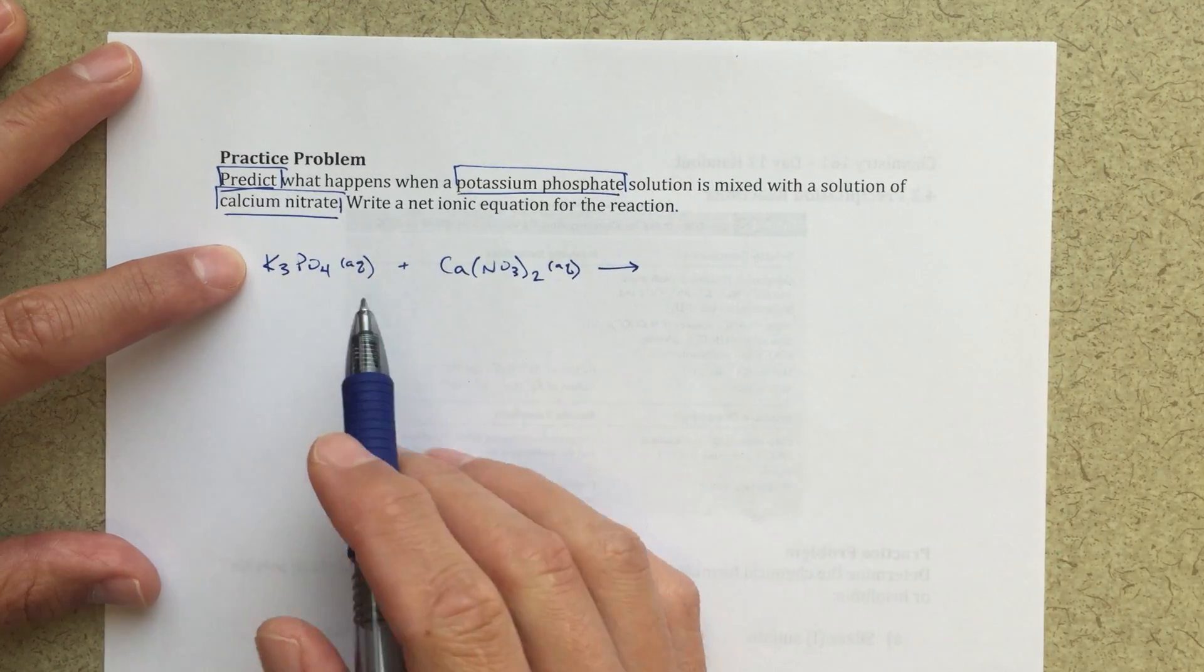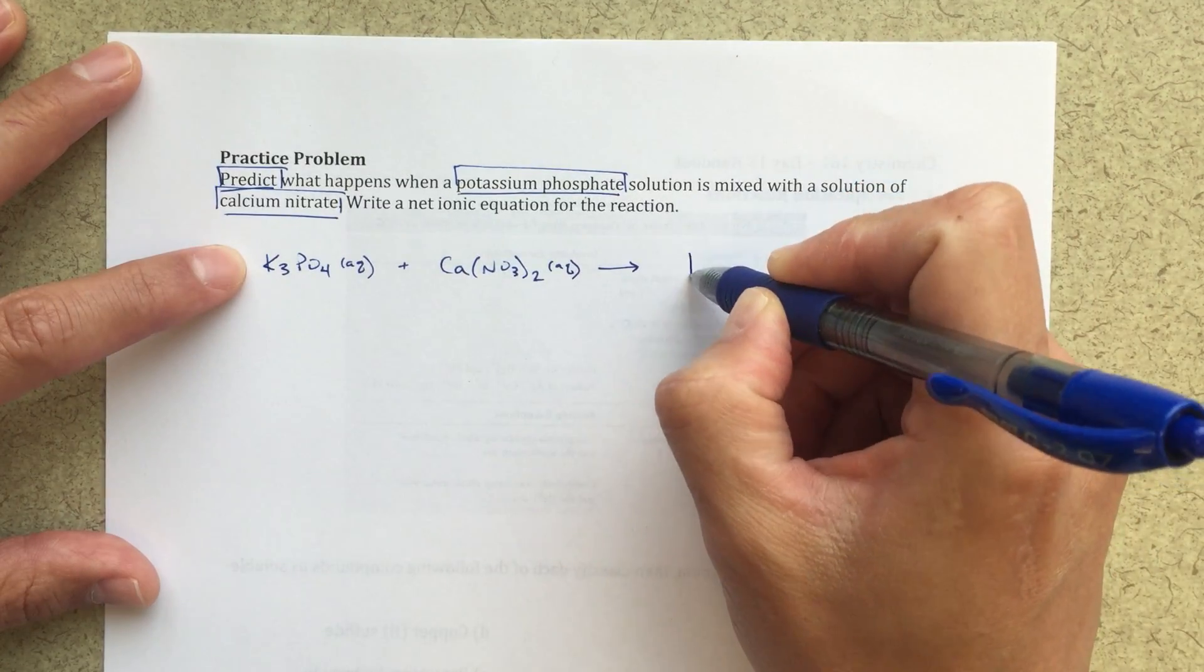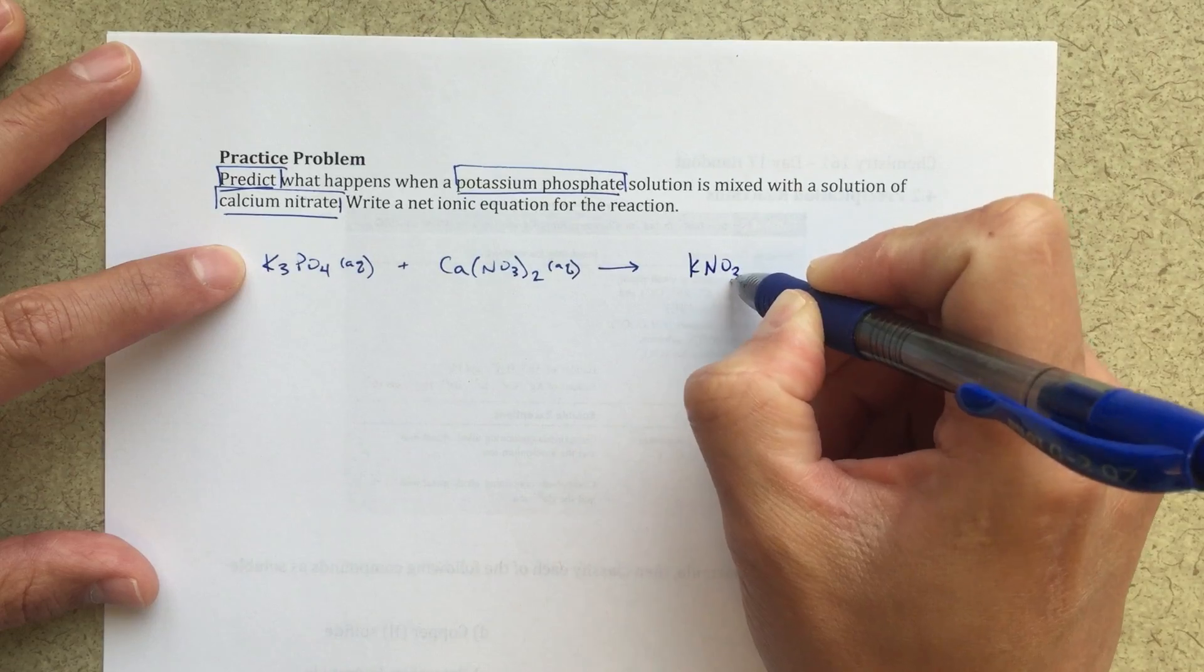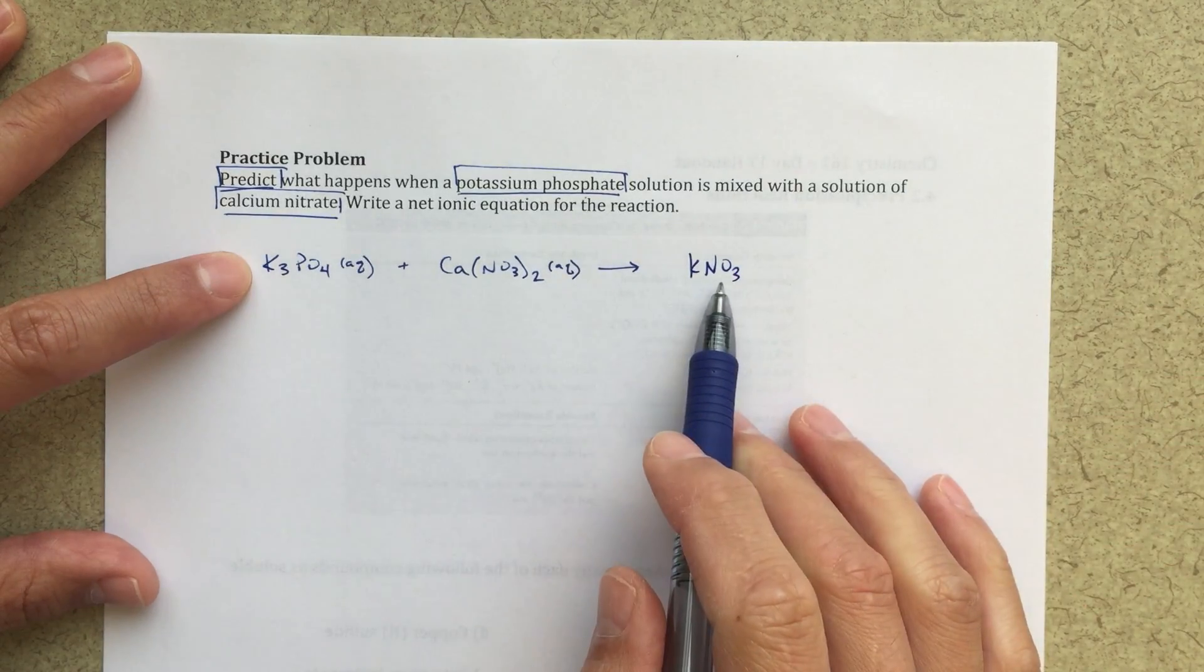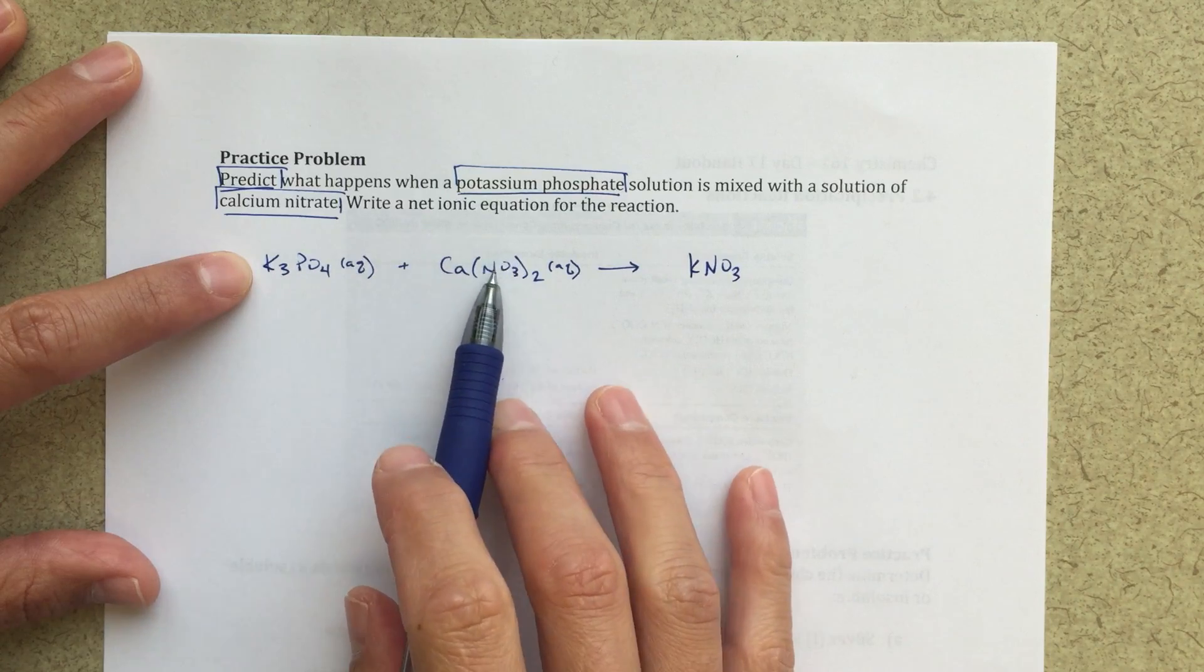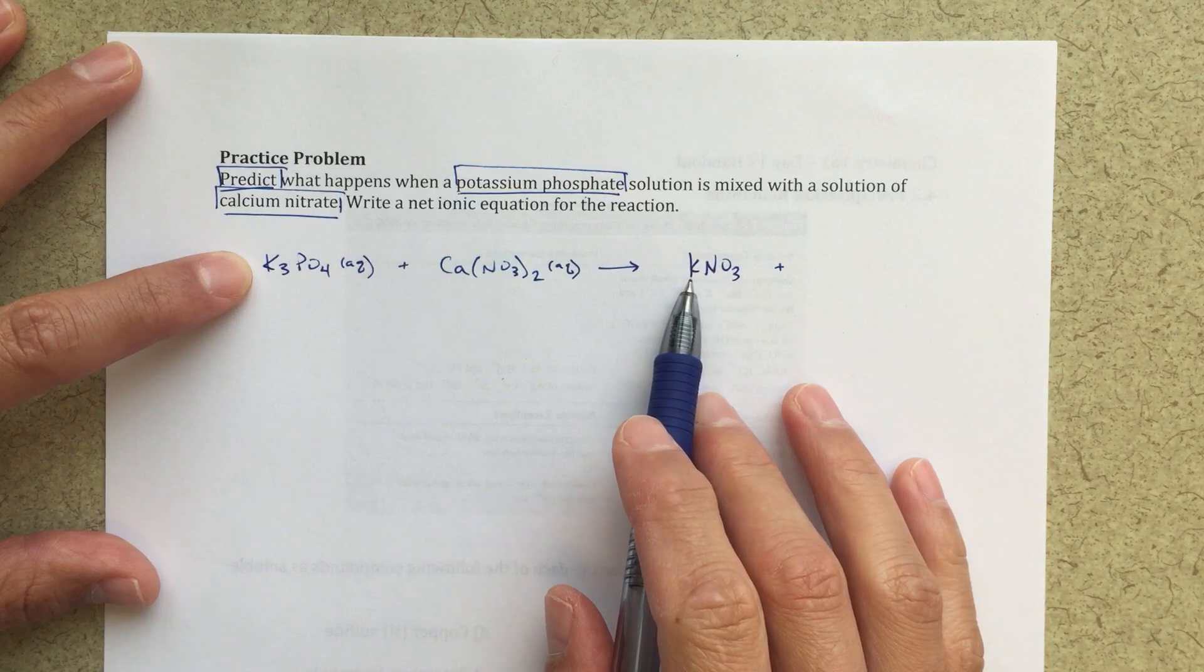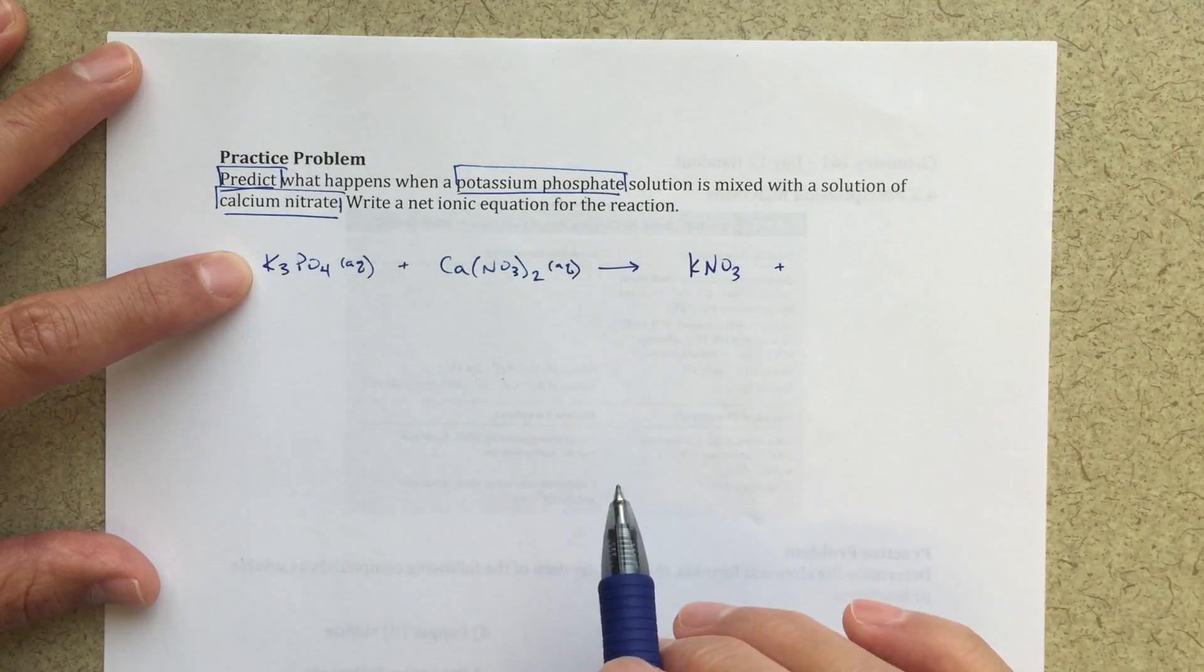Okay, so now what I need to do is figure out what are the different options for other products that could form. So KNO3 is going to be my first one, and I'm choosing KNO3 because I'm going to take the cation from this species and pair it up with the anion from the other species. I've got one potassium and one NO3 because potassium is plus one, and nitrate is minus one.